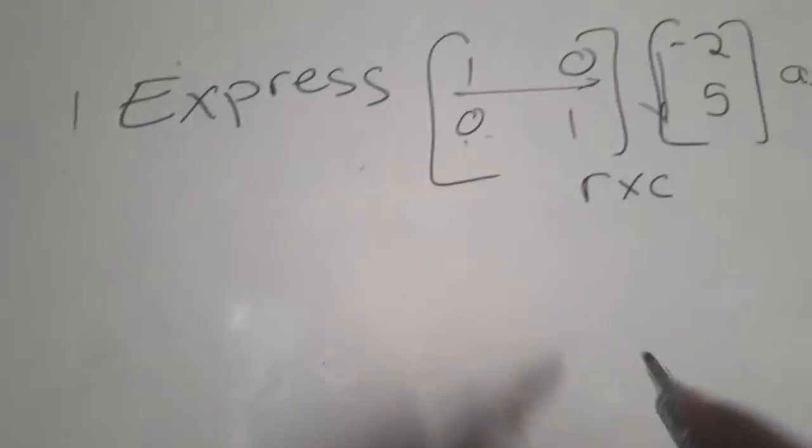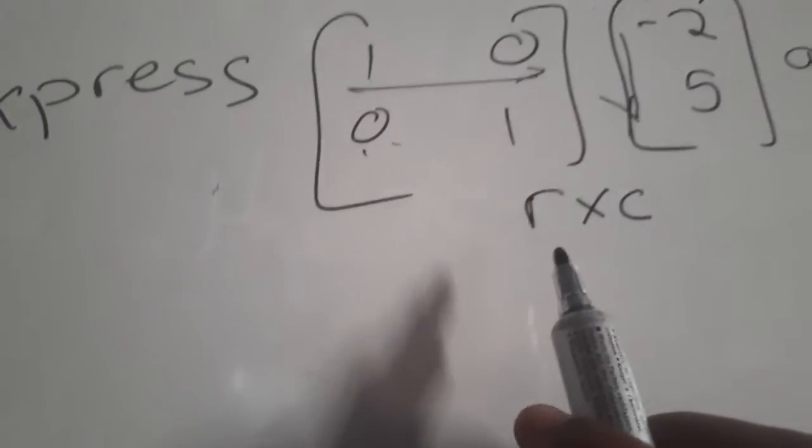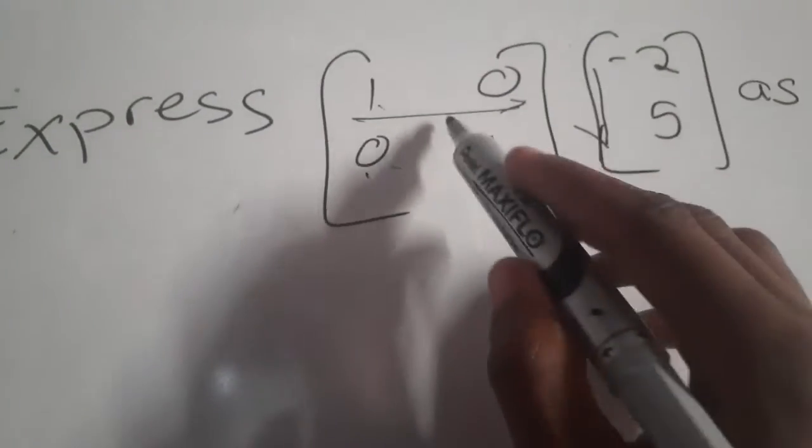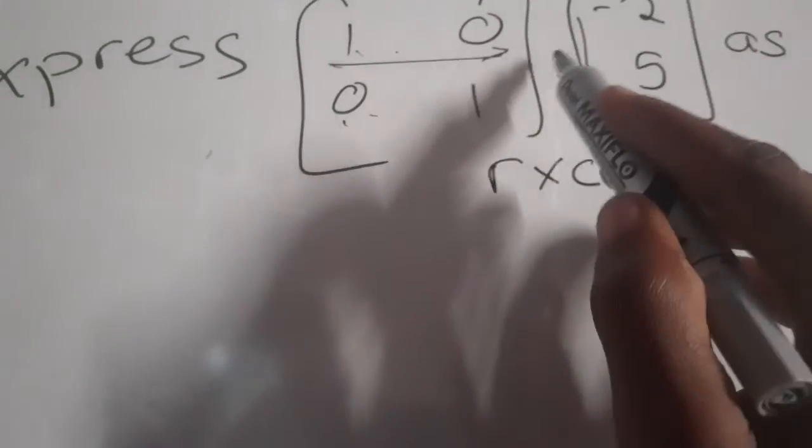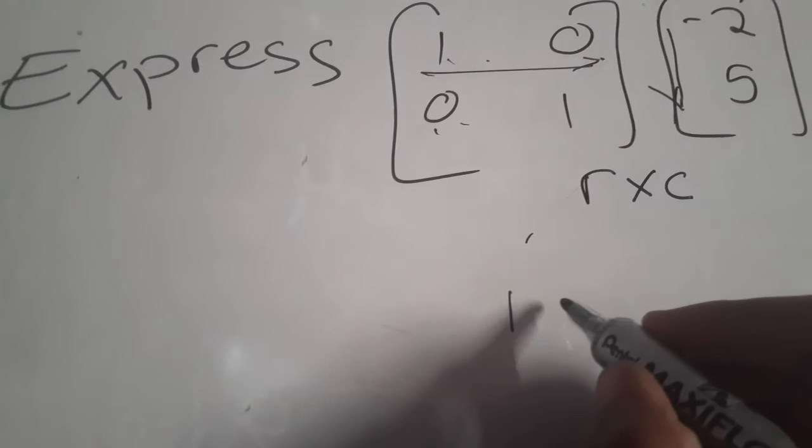We will have one times two - so the first number times the first number plus the second number times the second number. This is one times negative two plus zero times five.